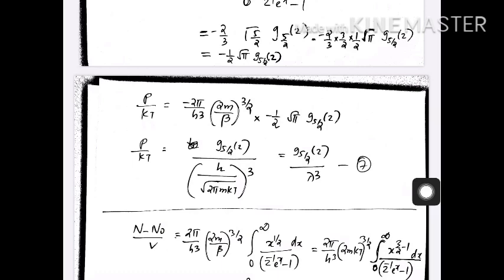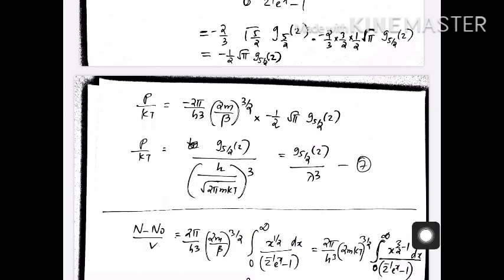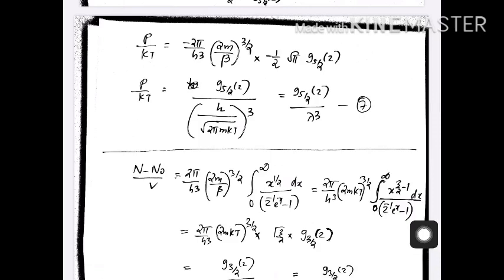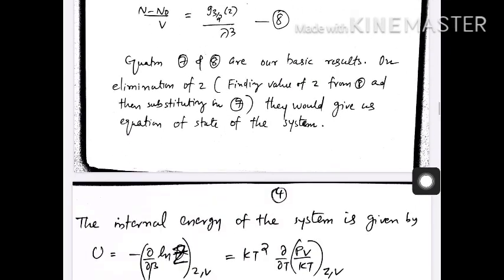The equation of state is an equation connecting the pressure, volume, temperature, and the number of particles. PV equal to NkT is the equation of state of a classical ideal gas. Here we want to have an equation of state for an ideal Bose gas.